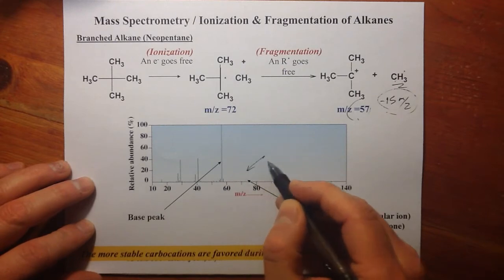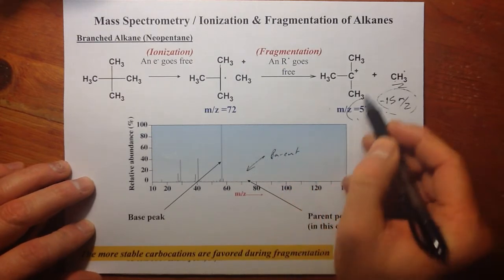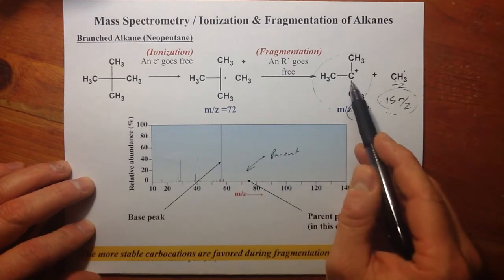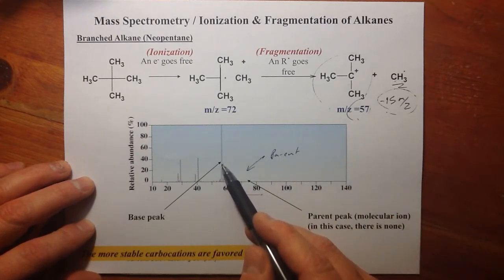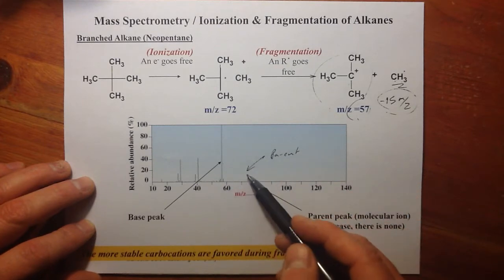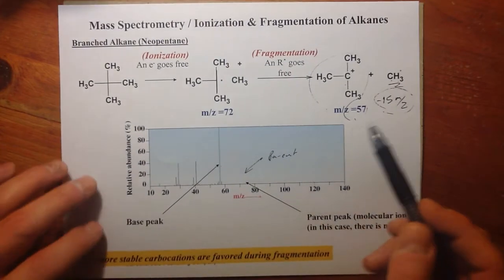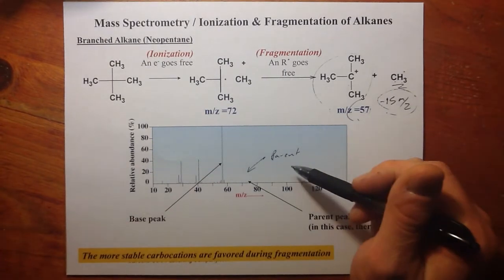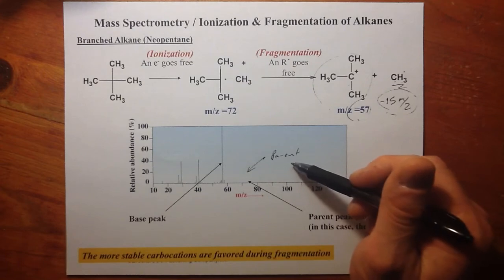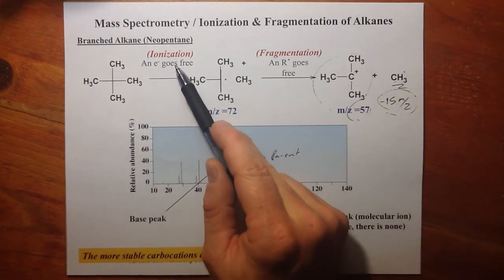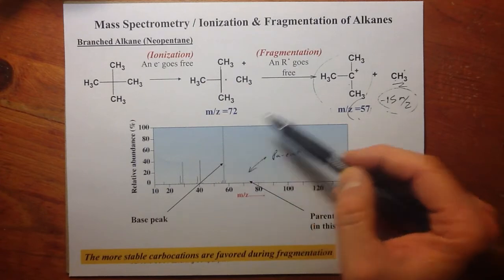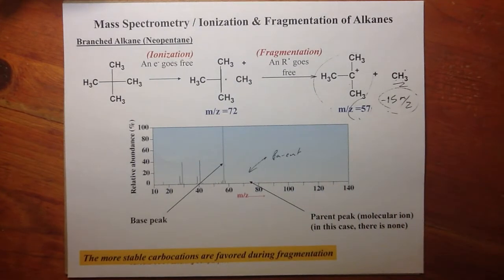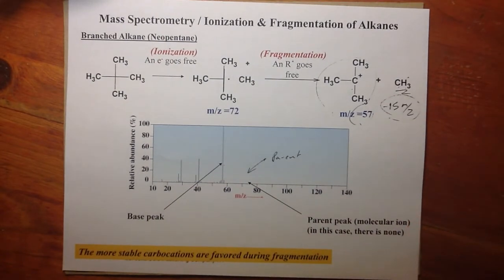We can do that for other structures. We don't see the parent peak here because this is so favored. But we see because this is such a favored fragmentation, it's going to cause complete fragmentation in some cases, not all. But in this particular mass spectra, there is no parent peak. The molecule in the ionization chamber is not just ionized but has completely fragmented to this tert-butyl cation.